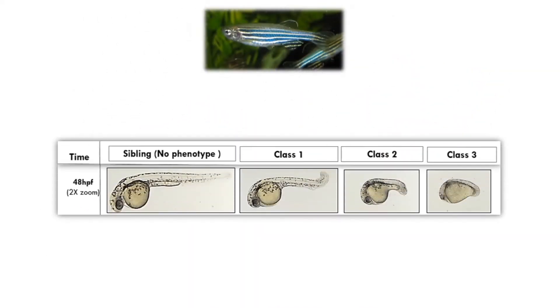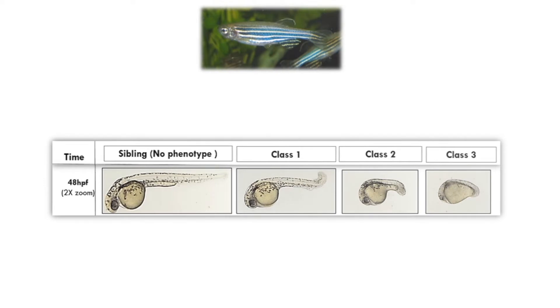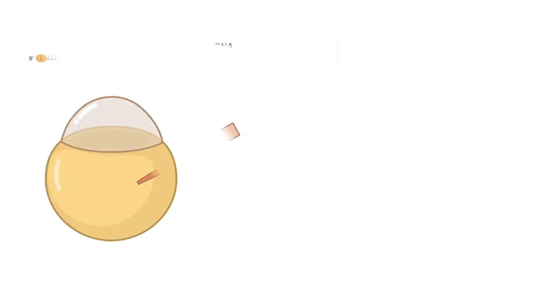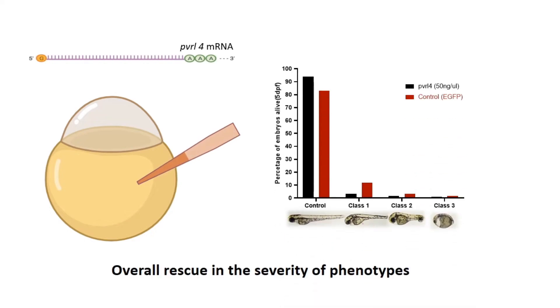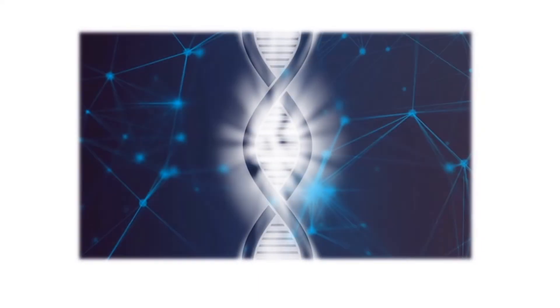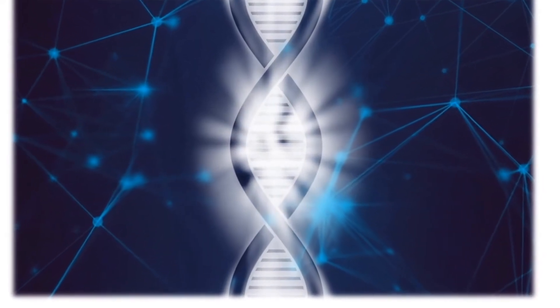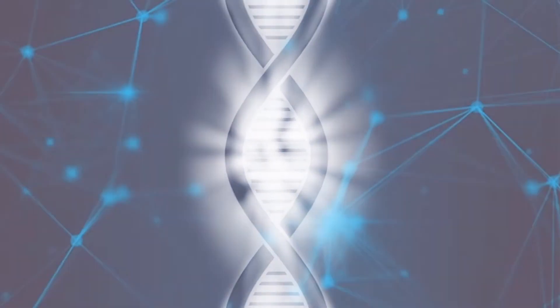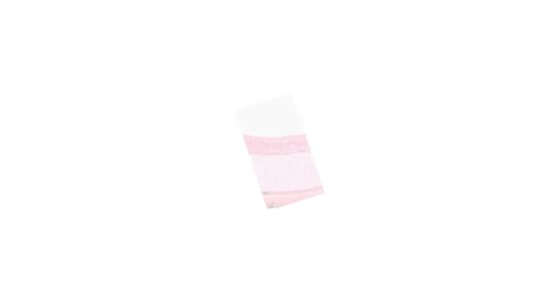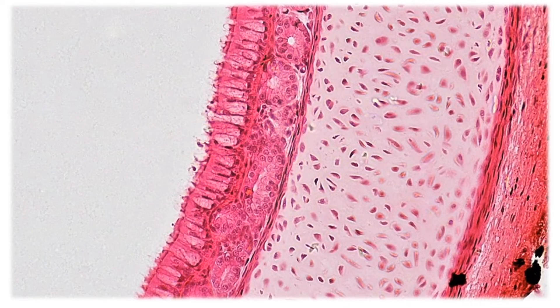When we characterized these fish lines, they showed several epithelial defects. My goal is to try to rescue the phenotypic severity observed in mutants by microinjection with full-length mRNA of potential target genes of grainy head. Doing this will help us identify the gene regulatory network controlled by grainy head in epithelial development.